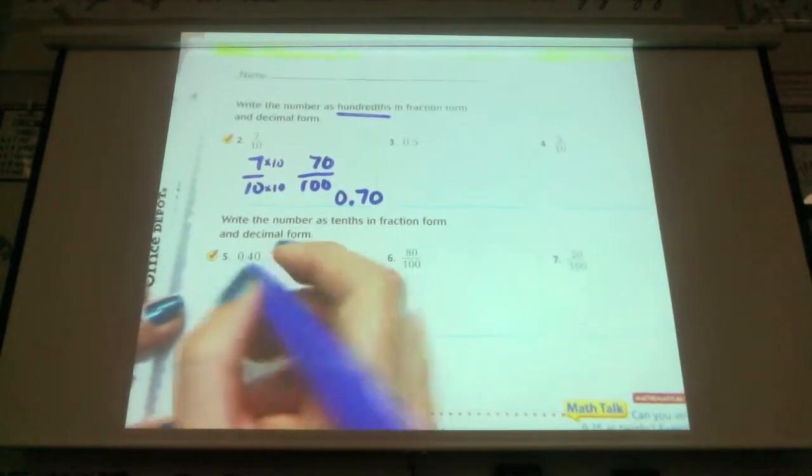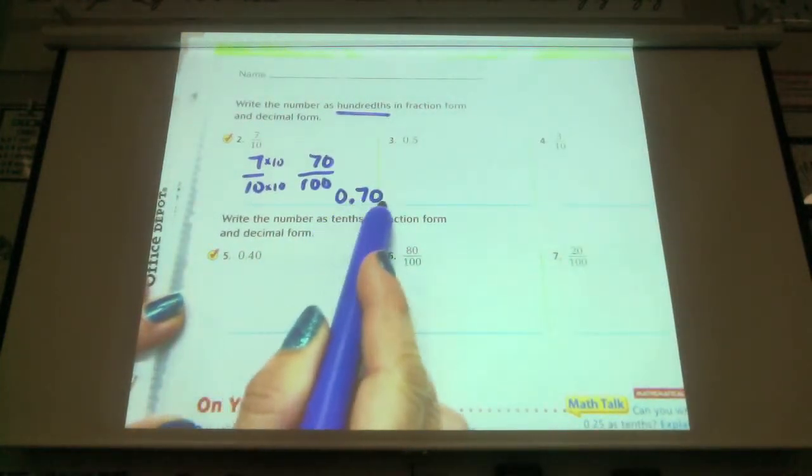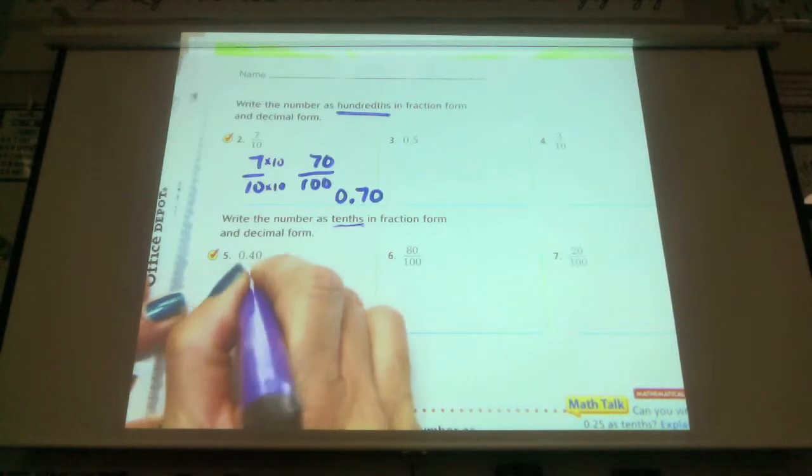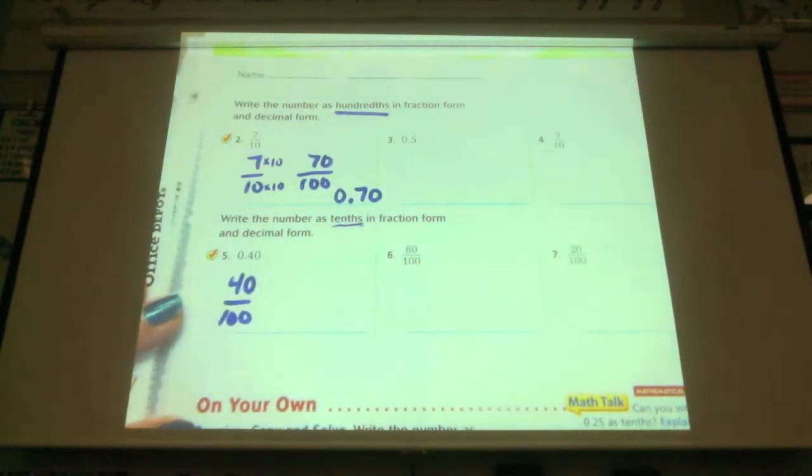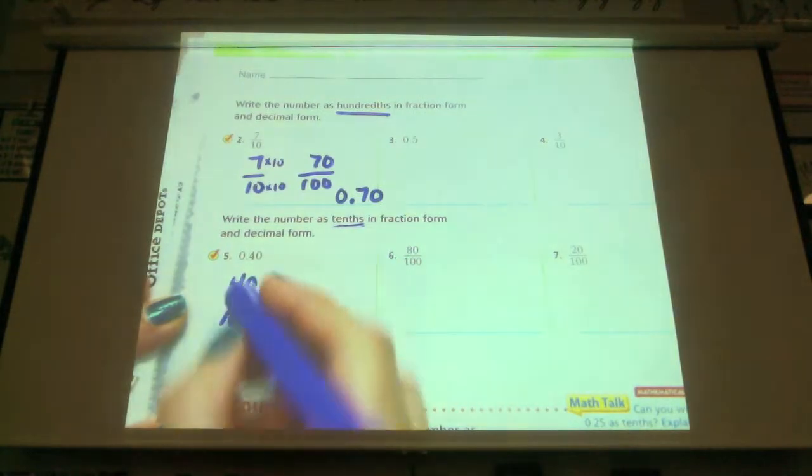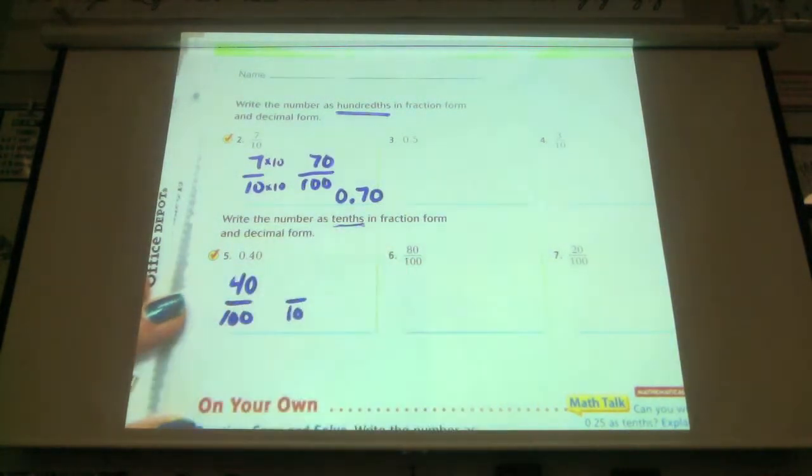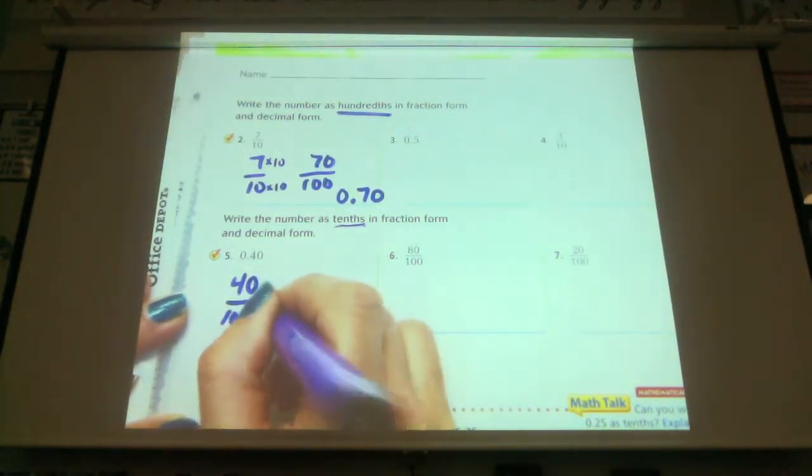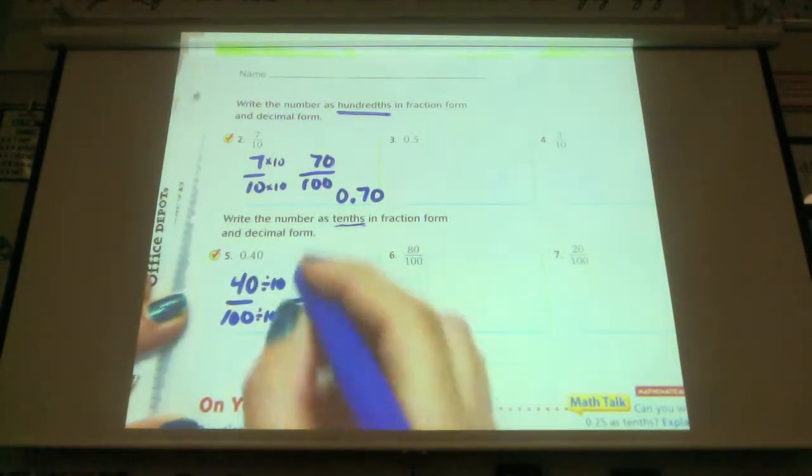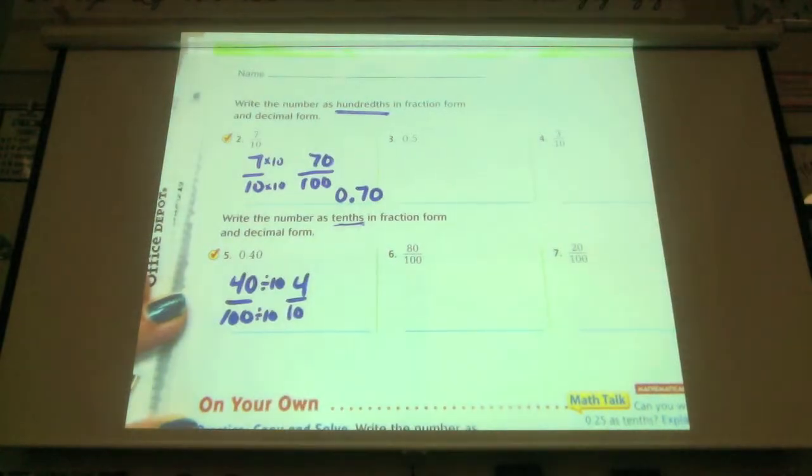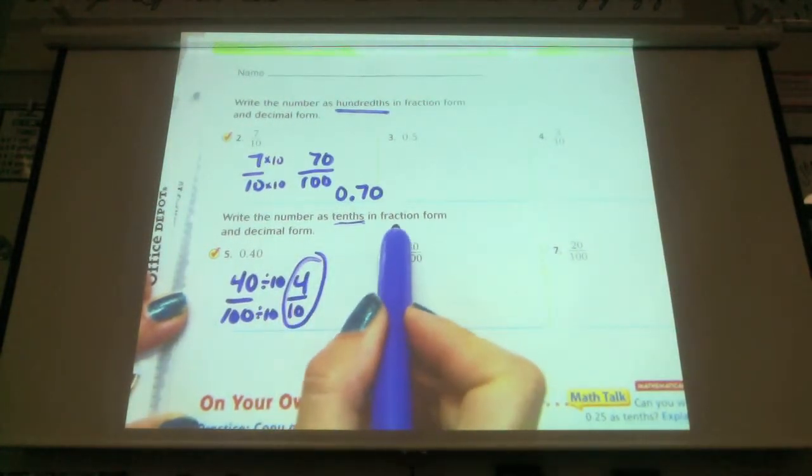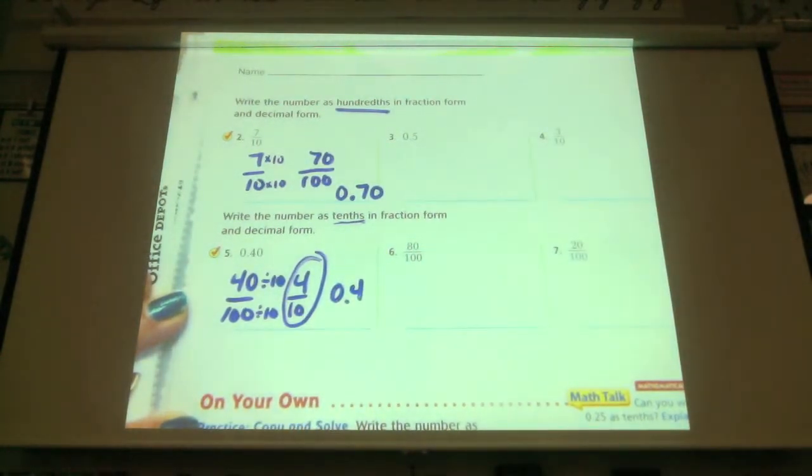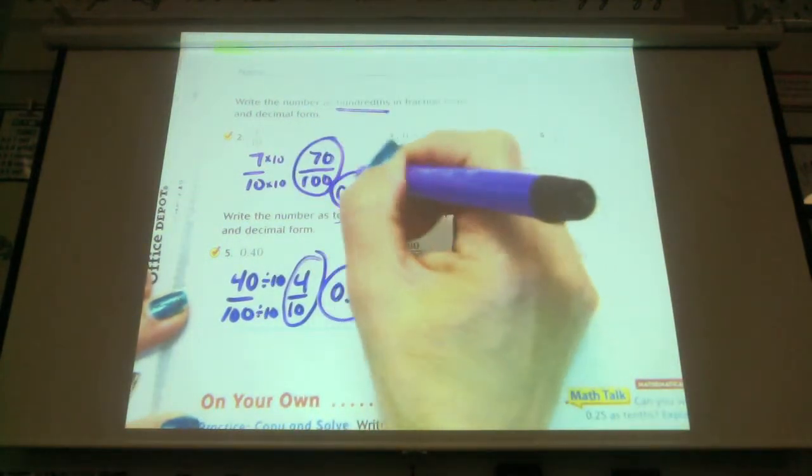"Now if I'm going to go from forty hundredths, I just said that this is seventy hundredths, so this has to be forty hundredths. Now I need to go to tenths. I know forty hundredths would look like 0.40. In order to get it to tenths, I have to divide by ten." The teacher explains: "I have to divide this numerator by ten, and I get four." This gives 4/10 as the fraction. "And now I'm going to change it to tenths, and I know tenths goes right there." The decimal is 0.4. "Those are my answers."